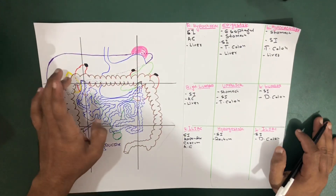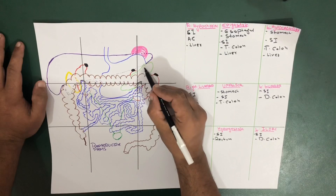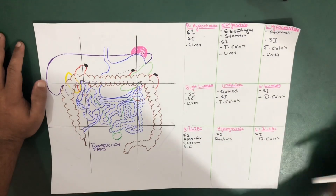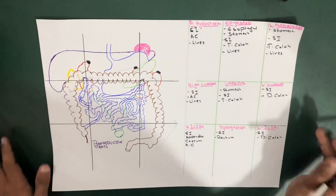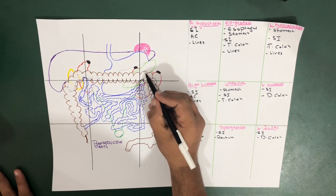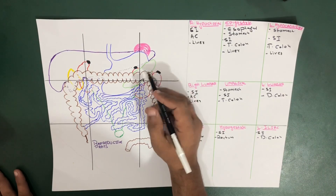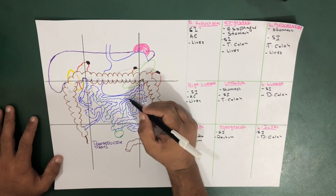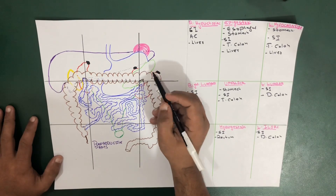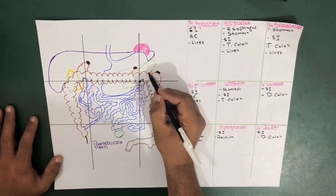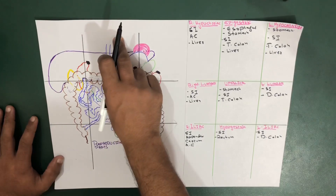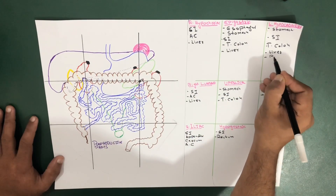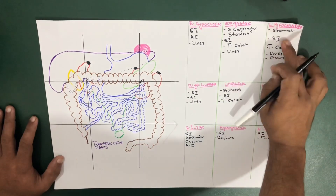Moving from the liver towards the pancreas — this small structure shown in light green color represents the pancreas. The pancreas is included in three regions: number one, the left hypochondriac region; number two, the epigastric region; number three, the umbilical region. So the pancreas is present in the epigastric region, the left hypochondriac region, and the umbilical region.